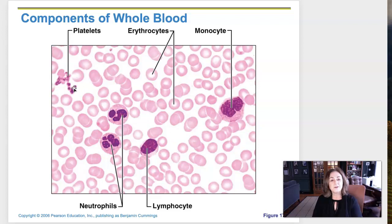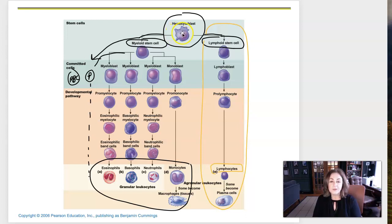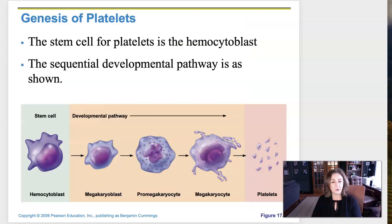Platelets are not full cells. Platelets are formed from the hemocytoblast — the stem cell that gives rise to all other blood cells, including platelets. Once the hemocytoblast differentiates into the myeloid stem cell, it will give rise to something called a megakaryocyte. I'm going to go to a picture in the book that shows how platelets are produced.